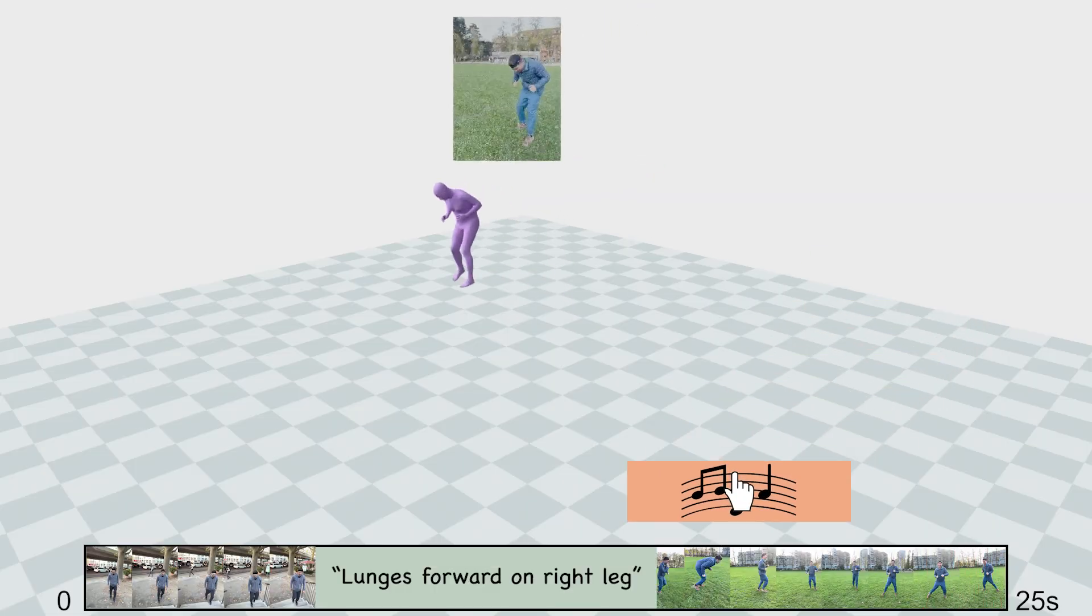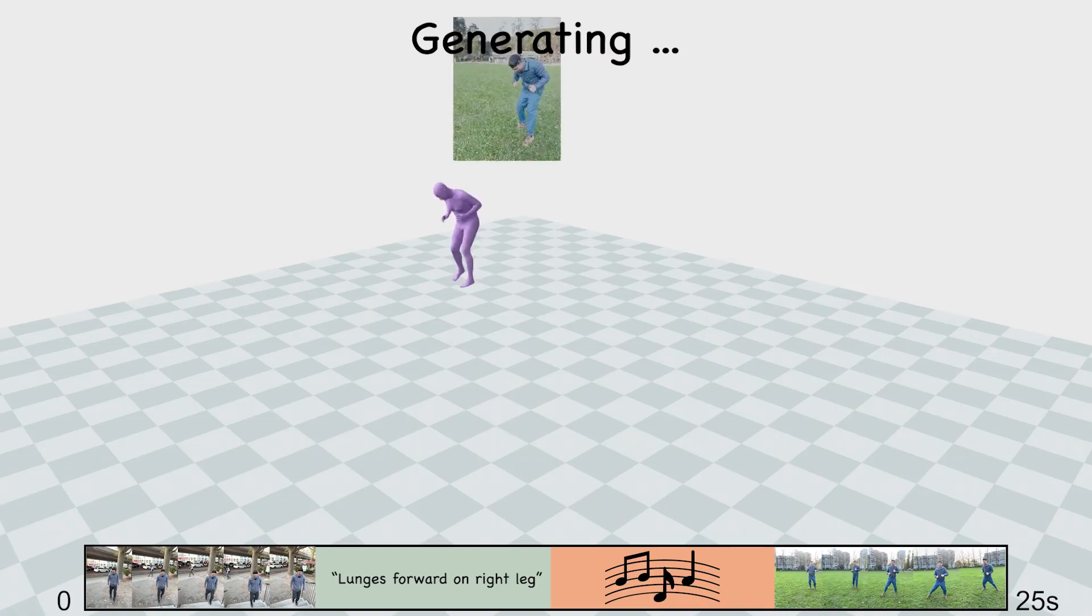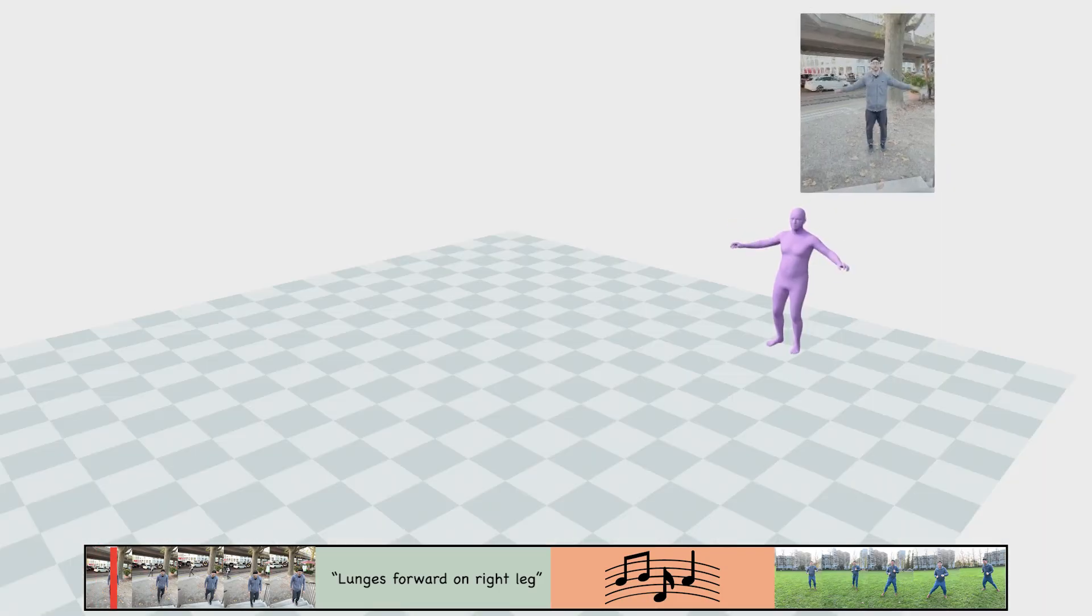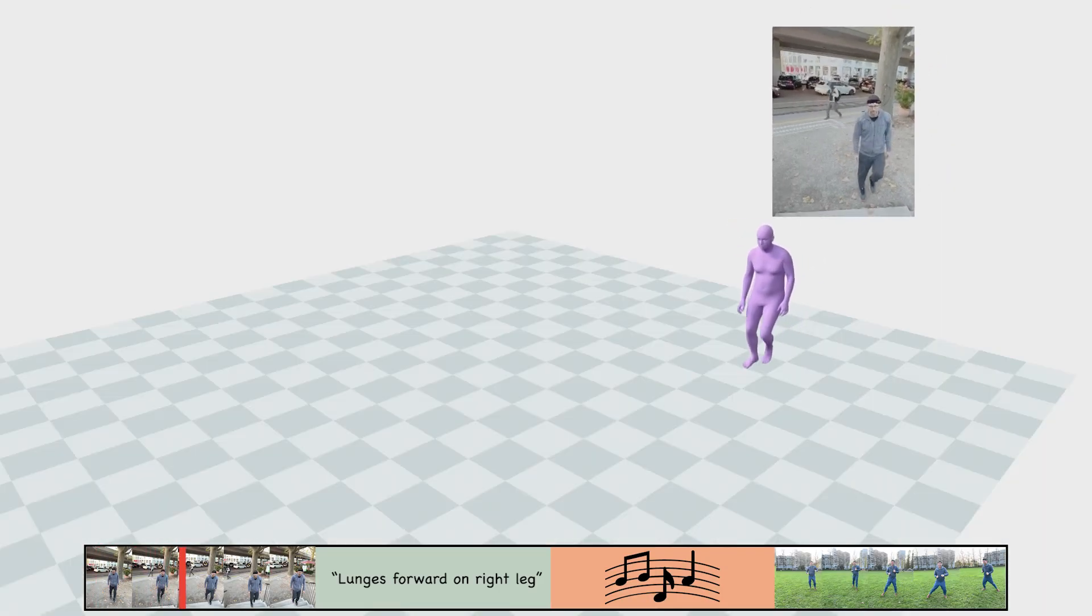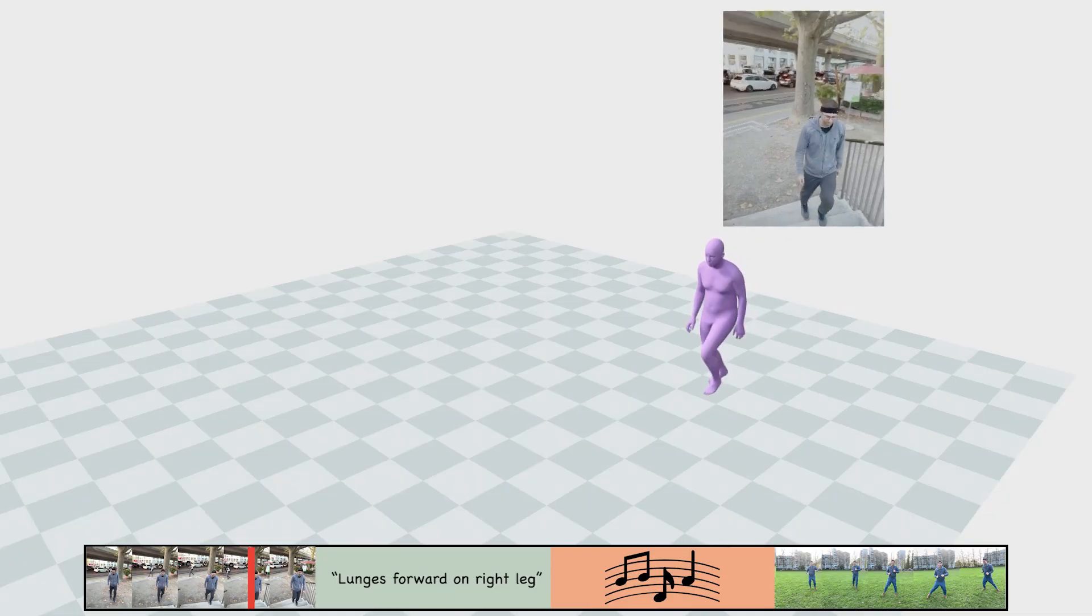We can also add music into the timeline to one-shot generate a human motion that seamlessly transitions from video to text, to music, and back to video.